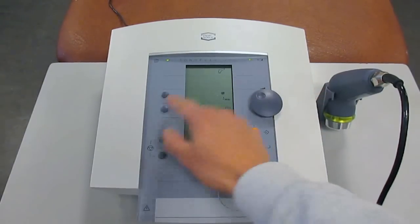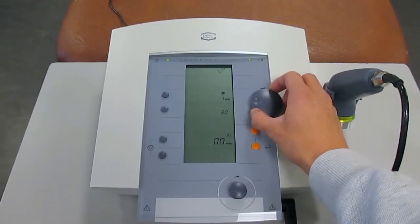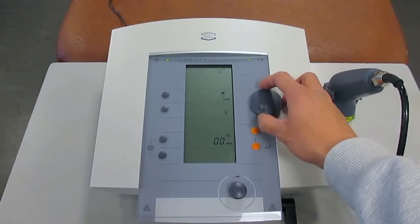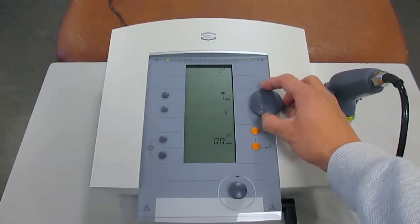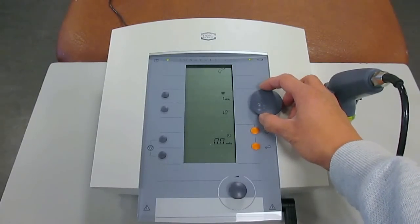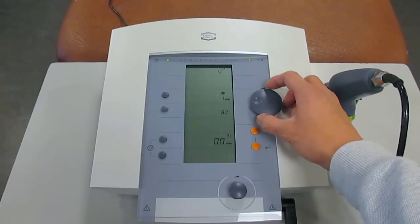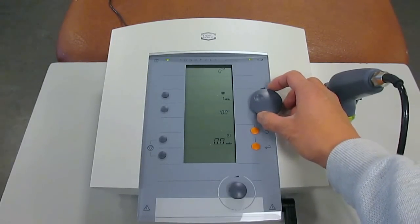For the Sonopulse 490, it offers you several pulse duration settings. There's 5%, 10%, 20%, 50%, 80%, and 100%, which is continuous ultrasound.